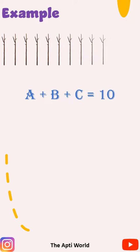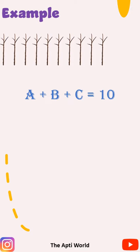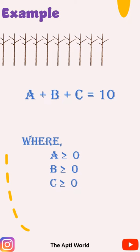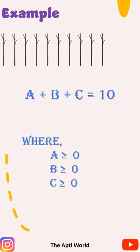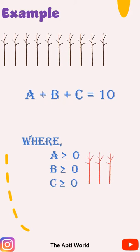Just like natural numbers we will take 10 sticks, but here as whole numbers A, B, C can be 0 as well. So we will take three more sticks which will denote 0.